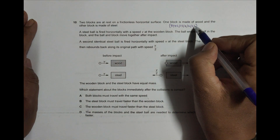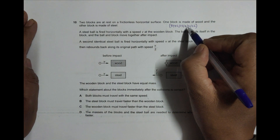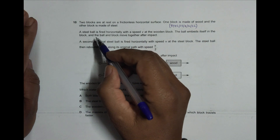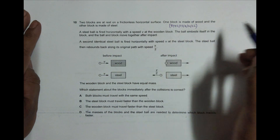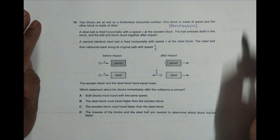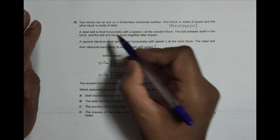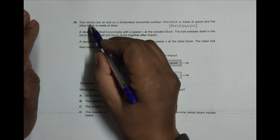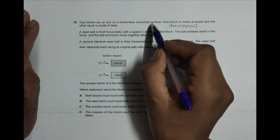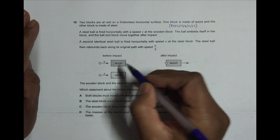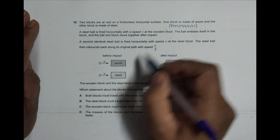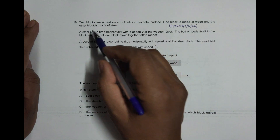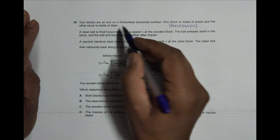Hello folks, this is your 2022 October-November Paper 1, question number 10. It is about the chapter dynamics and is concerned with momentum. Two blocks are at rest on a frictional horizontal surface — one block is made of wood and the other is made of steel.